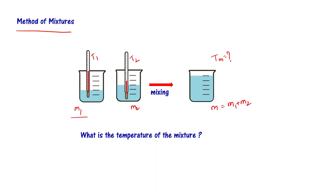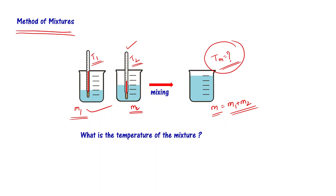Let's say I have a liquid of mass M1 and temperature T1 in this beaker. I have the same liquid, for example water, of mass M2 at temperature T2 in this beaker. Now we want to mix these two such that the mass of the mixture is going to be M1 plus M2. Do you know what is the temperature of the mixture?